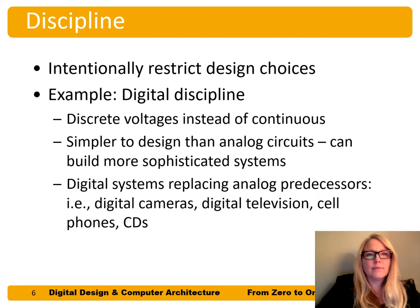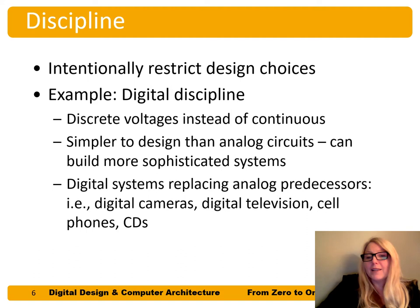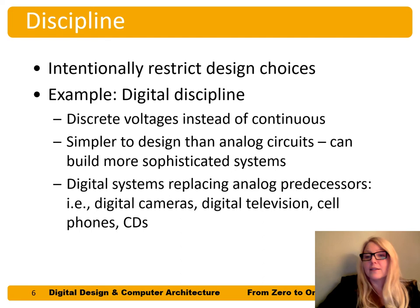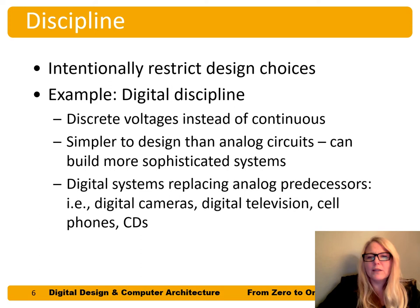Discipline is intentionally restricting design choices. The key example for this class is digital discipline: typically any signal has a continuous range of values, for example voltages, but we'll restrict ourselves to a subset of those voltages in digital design. This makes it simpler to design. This is why many analog devices — cameras, recording devices, music players — have become digital and replaced their analog predecessors. We can build more complex systems because instead of worrying about whether it's 1.1 volts, we just ask: is it approximately three volts?